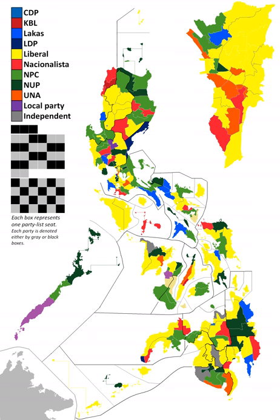After release of preliminary results, the Liberal Party emerged as the largest party in the chamber. Its coalition partners also held most of their seats. Incumbent Speaker Feliciano Belmonte Jr. is expected to be easily re-elected as the Speaker of the 16th Congress.